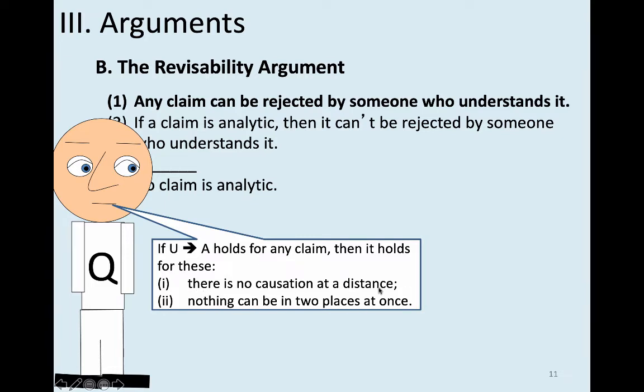The claim that there is no causation at a distance means there is no efficient causation — not Aristotelian formal causation, but ordinary causation, like smoking causes cancer or exercise causes lower blood pressure. We're talking about ordinary causation.